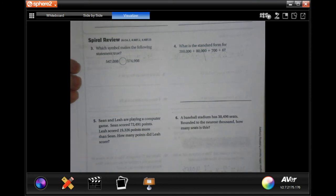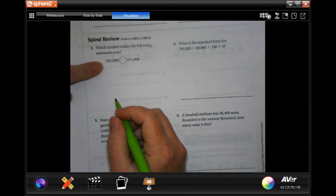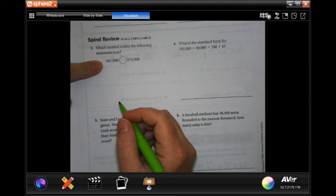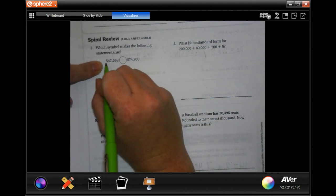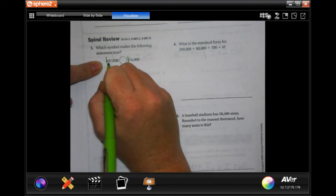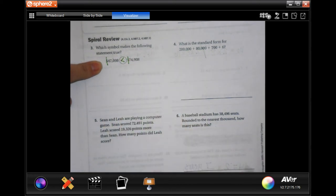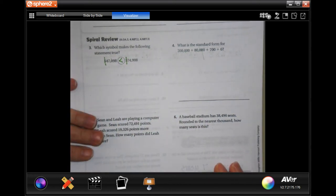We're going to start on number three. It says which symbol makes the following statement true, so let's know which one is greater, less than, or equal to. I like these because they're kind of like ABC order. When the first one is the same you go to the next one. Well then that one's four and that one's seven, which makes that one bigger.